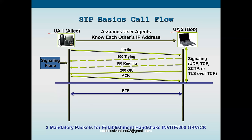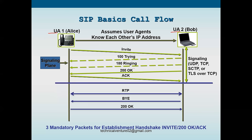After the ACK, RTP is established between the two endpoints. To disconnect the call, whoever wants to end it sends a BYE message - if User Agent 2 disconnects first, BYE goes from User Agent 2 to User Agent 1; if User Agent 1 disconnects, it goes the other way. The response to BYE is '200 OK'. This is the normal basic call flow.